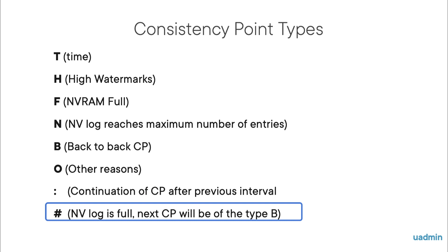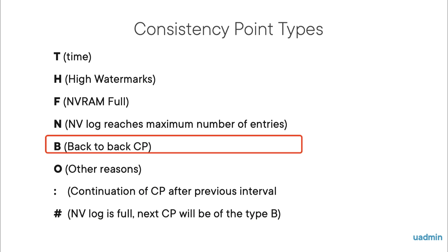Now back to the B. The B stands for back-to-back. This means that if one consistency point is being written, the other NVRAM bank also fills up. So after the CP is done, a new CP has to be written again.